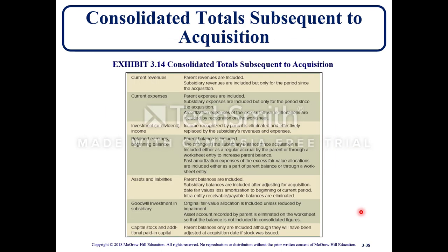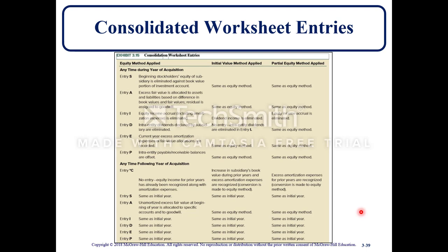The consolidated total subsequent to the acquisition — exhibit 3.14 — covers current revenues, current expenses, investment, retained earnings, assets and liabilities, goodwill, investment, capital stock, and additional paid-in capital. The consolidated worksheet entries compare the equity method, initial value method, and partial equity method, explaining what happens with each labeled entry: S, A, I, D, E, P, and C — both during the year of acquisition and in any year following. It's essentially a summary and checks-and-balance worksheet for everything discussed.